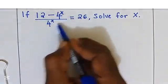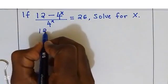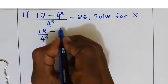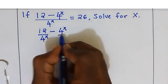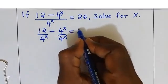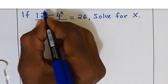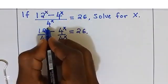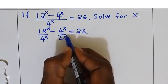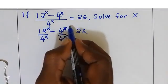I will start by splitting this into fractions. That is 12 over 4 power x, minus 4 power x divided by 4 power x, this is equal to 26. Here I can simplify: 4 power x divided by 4 power x equals 1.